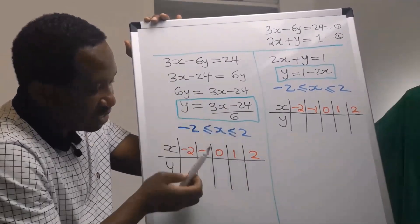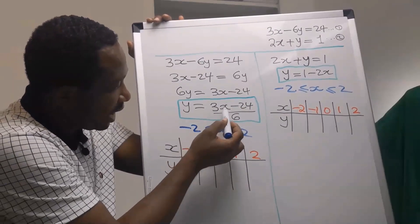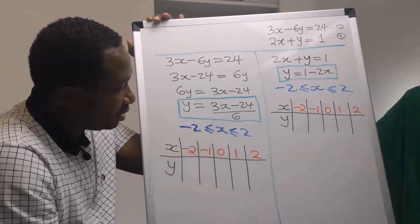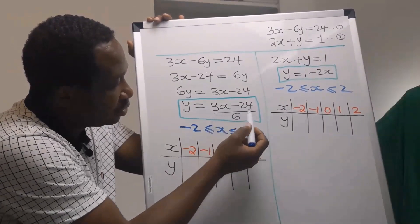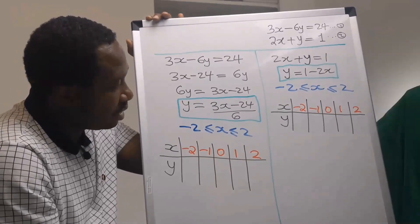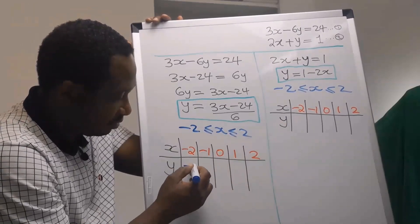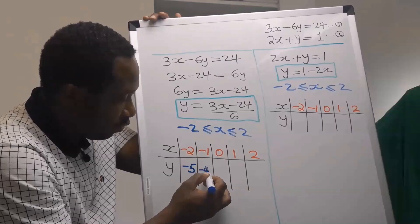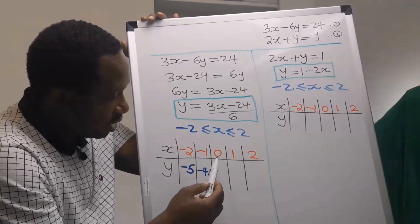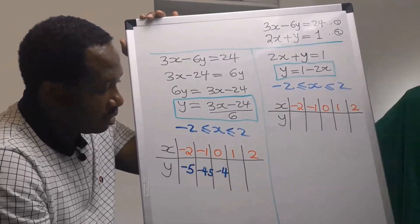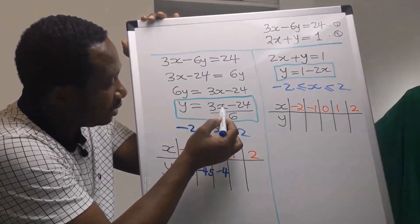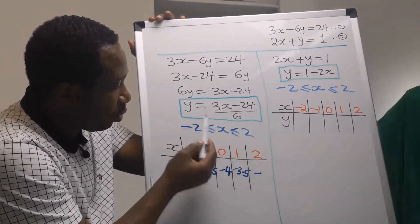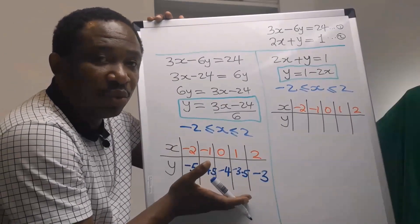For table 1, I will input x equals minus 2: minus 2 times 3 is minus 6, minus 6 minus 24 is minus 30, divided by 6 gives minus 5. For x equals minus 1, y is minus 4.5. For x equals 0, y is minus 4. For x equals 1, y is minus 3.5. For x equals 2, y is minus 3. Table 1 is complete.